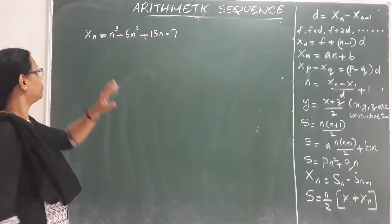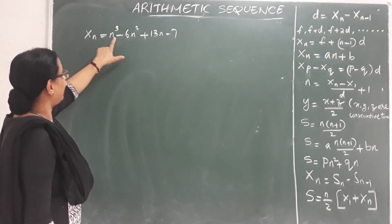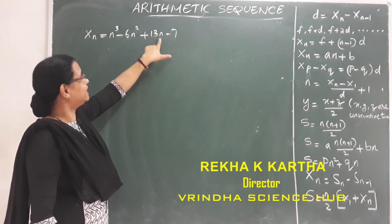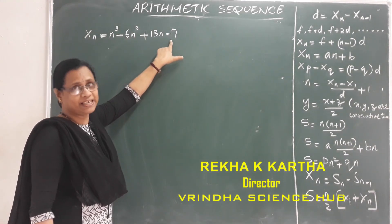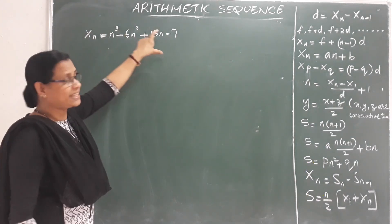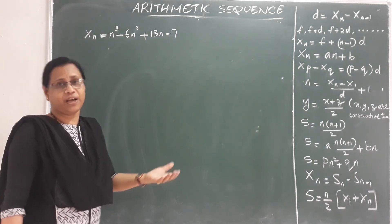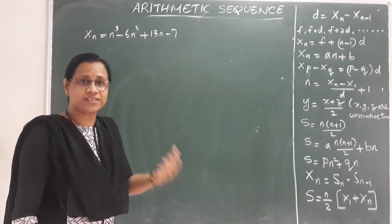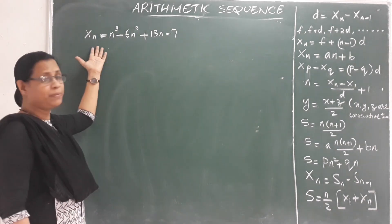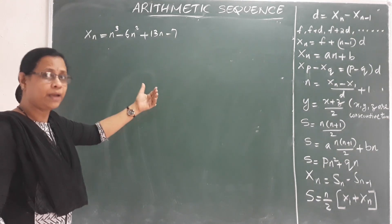Next question. xn is equal to n cube minus 6n square plus 13n minus 7. In this general term, we are looking at whether it is an AP or not. This is an nth term — any sequence whose nth term is of this form.